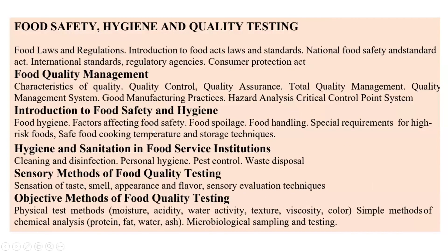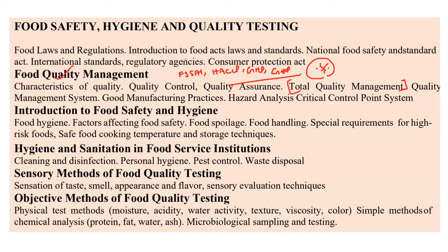Coming to the food safety and hygiene part, you have to know about HACCP, FSSAI regulations, GMP (Good Manufacturing Practice), GHP (Good Hygiene Practice), and Total Quality Management (TQM). Related to HACCP there are seven points, and sequence-type questions can be asked about those seven steps.